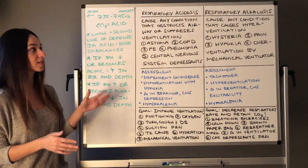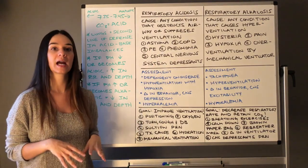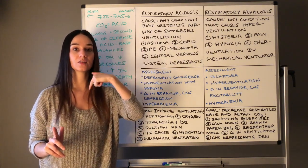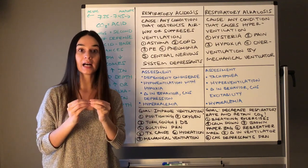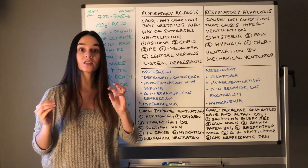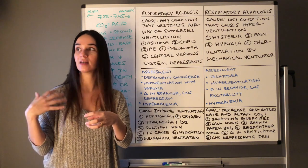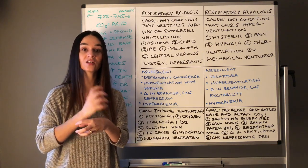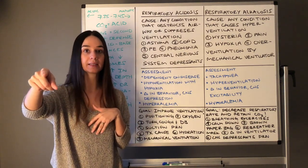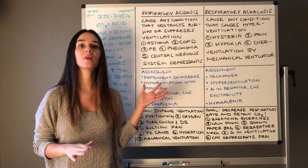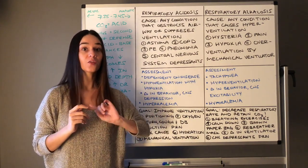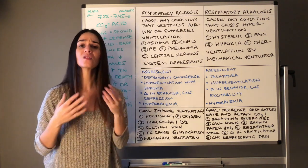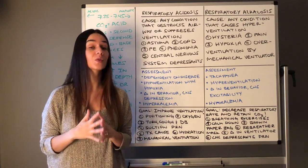Let's talk about respiratory acidosis. Think about the general pathophysiology of your lungs: we inhale oxygen, it goes into our airway and down into the lungs, and the alveoli allow gas exchange. Oxygen enters the circulatory tract, and CO2 is blown out. Any disorder that affects the ability of the lungs to exhale CO2 will increase acid in our body, because CO2 is an acid. Any disorder that obstructs your airways can cause this.